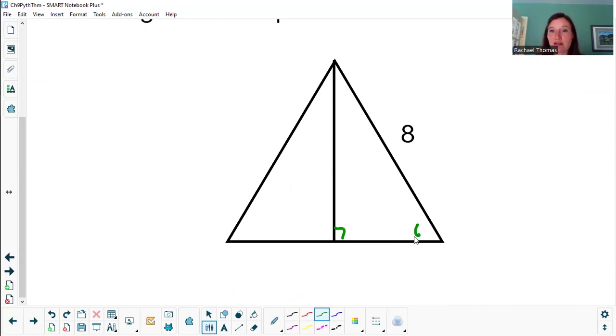It's going to make a nice 90 degree angle there. This angle is 60 because it's equilateral, and this angle is 30 because the whole angle was 60 and it's cut in half.